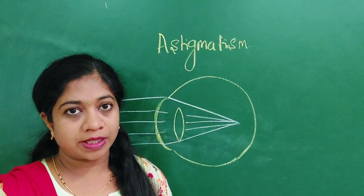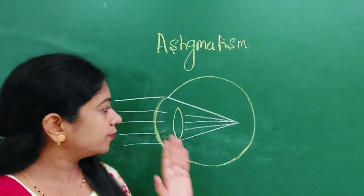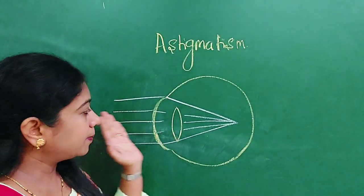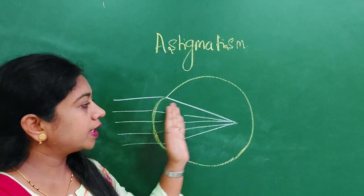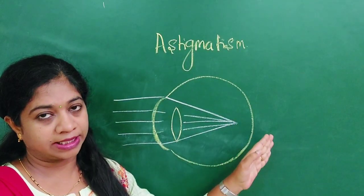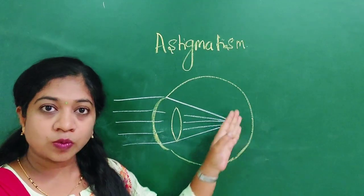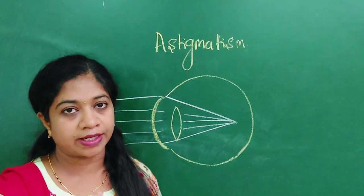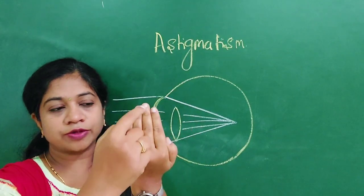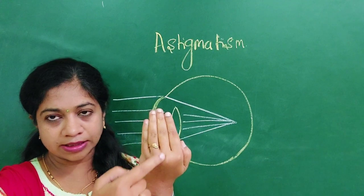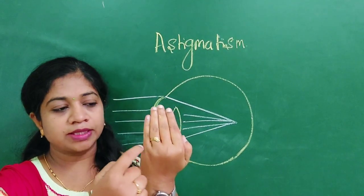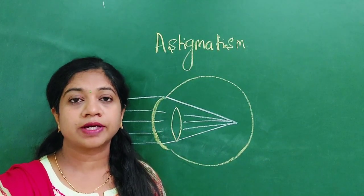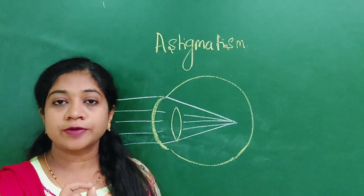Before going to the definition of astigmatism, let's understand how it happens. If you have seen my previous videos, I have shown the optical diagrams for myopia as well as hypermetropia. The parallel rays of light coming from infinity were getting focused either in front or behind the retina, forming a point image. This happened because the anterior surface of the cornea was uniformly spherical. The vertical meridian and horizontal meridian had the same radius of curvature, so it was forming a focal point.